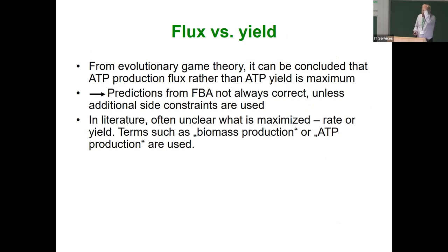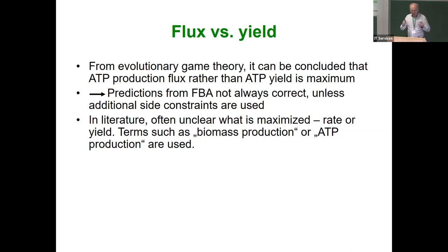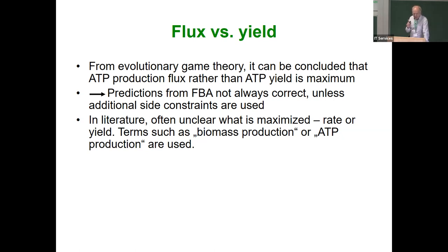From evolutionary game theory, the first guess is that ATP production flux — rather than ATP yield — is maximized due to competition. Therefore predictions from earlier FBA approaches, which considered yield, are not always correct. They are correct in predicting the best possible situation, but one cannot claim it is really achieved in the living cell. However, this is a question of side constraints.